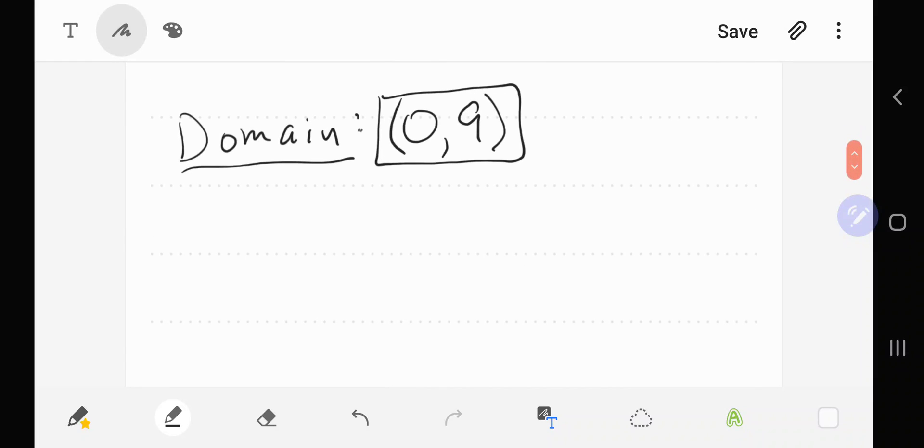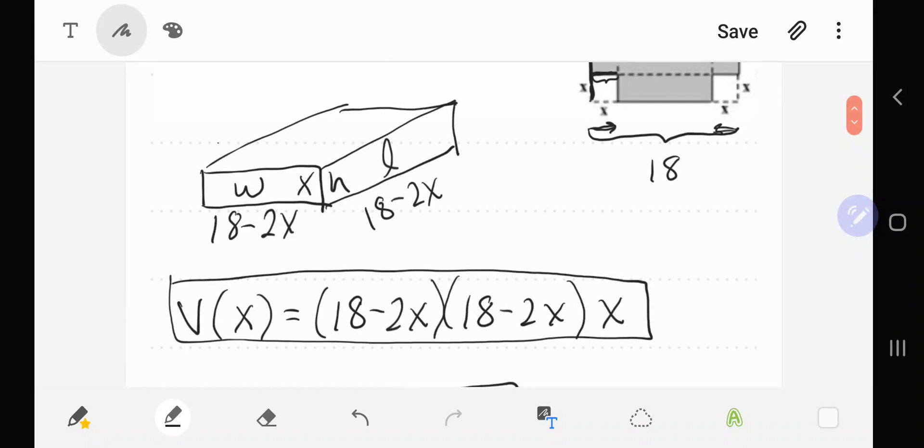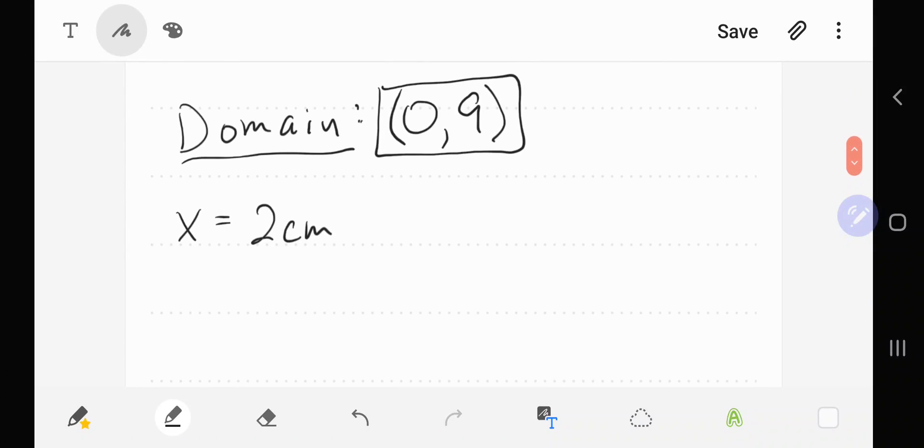Now we're going to look at a particular value. Let's say that we decide to let x equal 2 centimeters. We want to find the dimensions of the box if we cut 2 centimeters off.